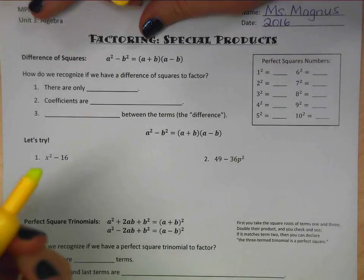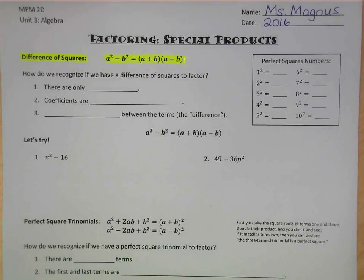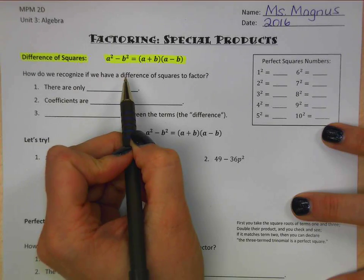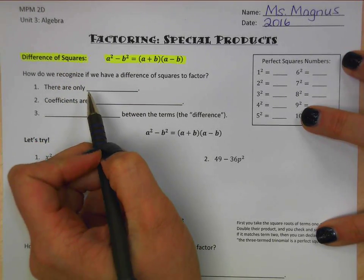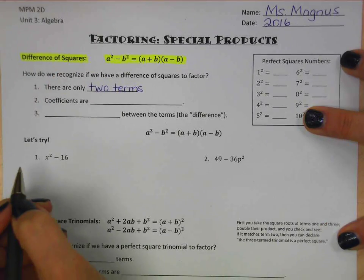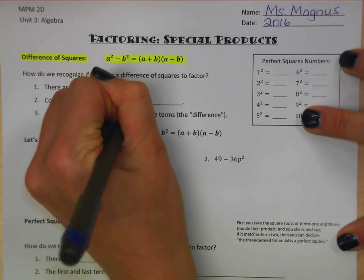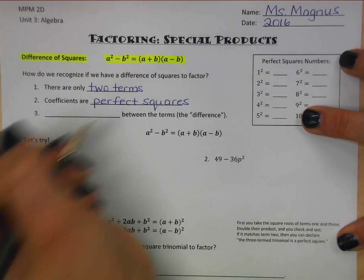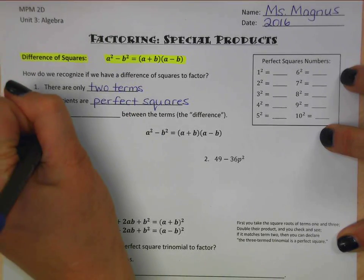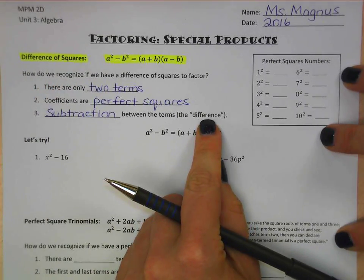Let's first look at difference of squares. If you remember this basic equation from earlier: a squared minus b squared equals (a plus b)(a minus b). The first question is how do I know if I have a difference of squares? First, there are only two terms. Second, the coefficients are perfect squares. And finally, between the two terms we have a subtraction — that's why we call it a difference of squares. Difference is what you get when you subtract.